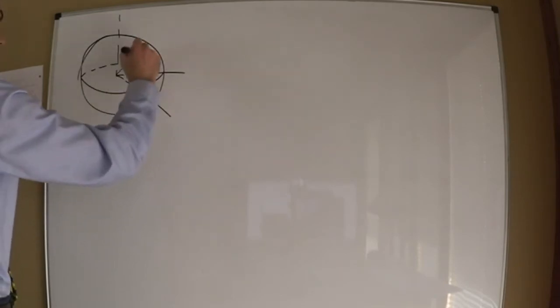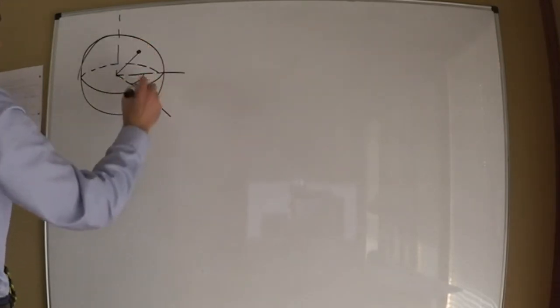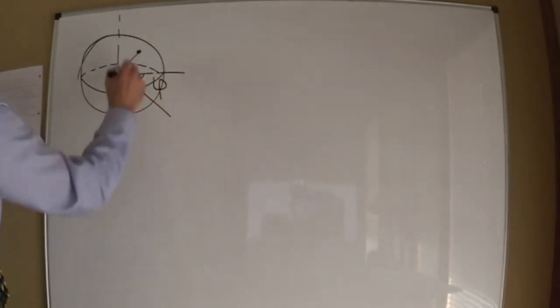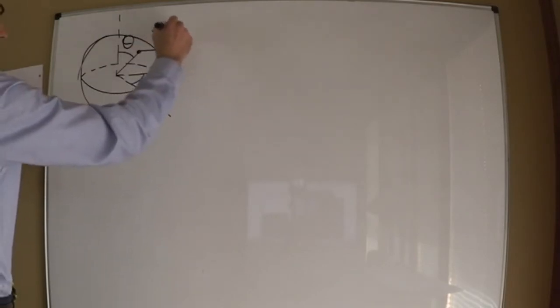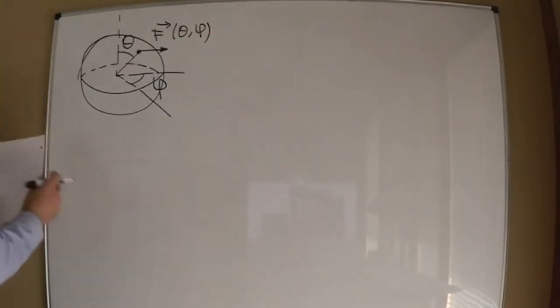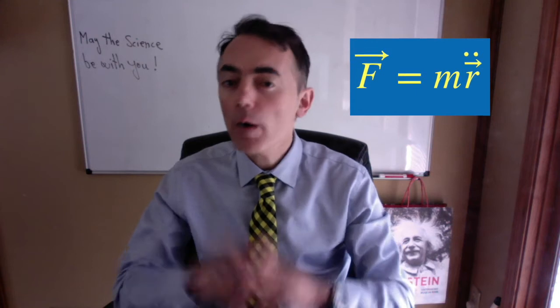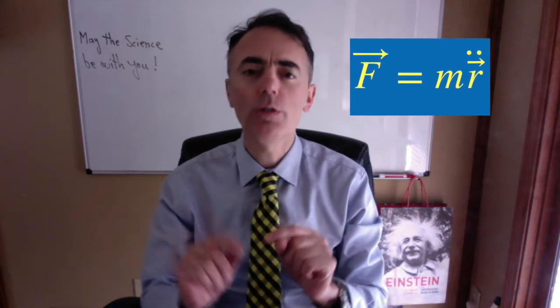The particle is moving on a two-dimensional surface, so we need to find two equations to describe its motion. What are the equations of motion of this particle? We start our analysis with Newton's second law: F equals m r double-dot.